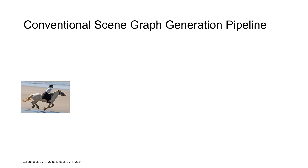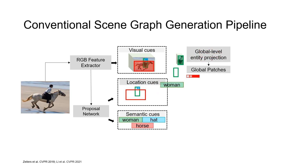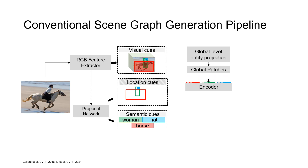An image goes through an RGB feature extractor to generate visual cues and a proposal network to generate semantic and location cues. The cues for each entity bounding box region are globally projected, resulting in global patches for all entities, where each patch corresponds to the entire bounding box region of a single entity. These global patches are processed by the encoder network, which are then split into subject and object relation components.